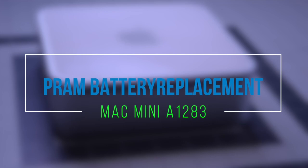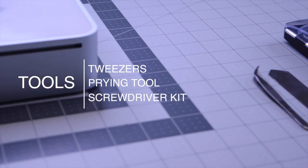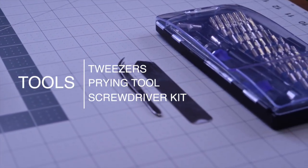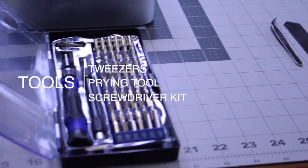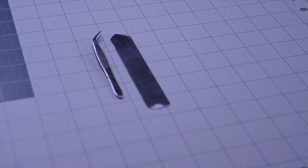PRAM battery replacement for Mac Mini A1283. The tools we're going to need are tweezers, a prying tool, and a screwdriver kit with a flathead and a Phillips head screwdriver.